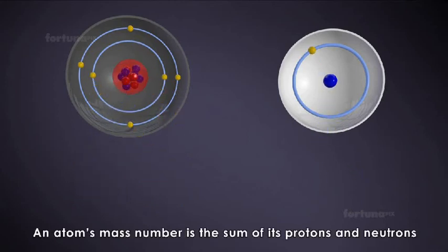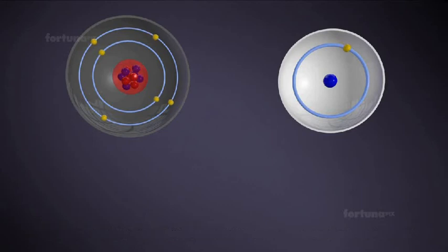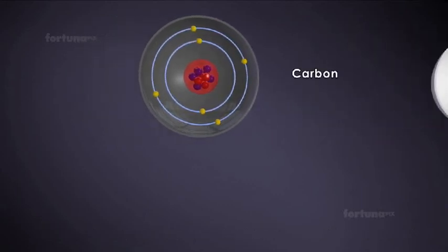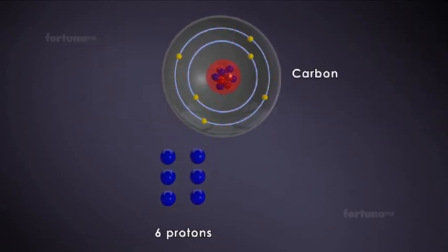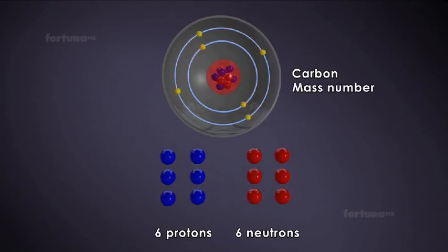An atom's mass number is the sum of its protons and neutrons. In our example, carbon has six protons in its nucleus and six neutrons. So, six protons plus six neutrons will give us the mass number of carbon, which is 12.